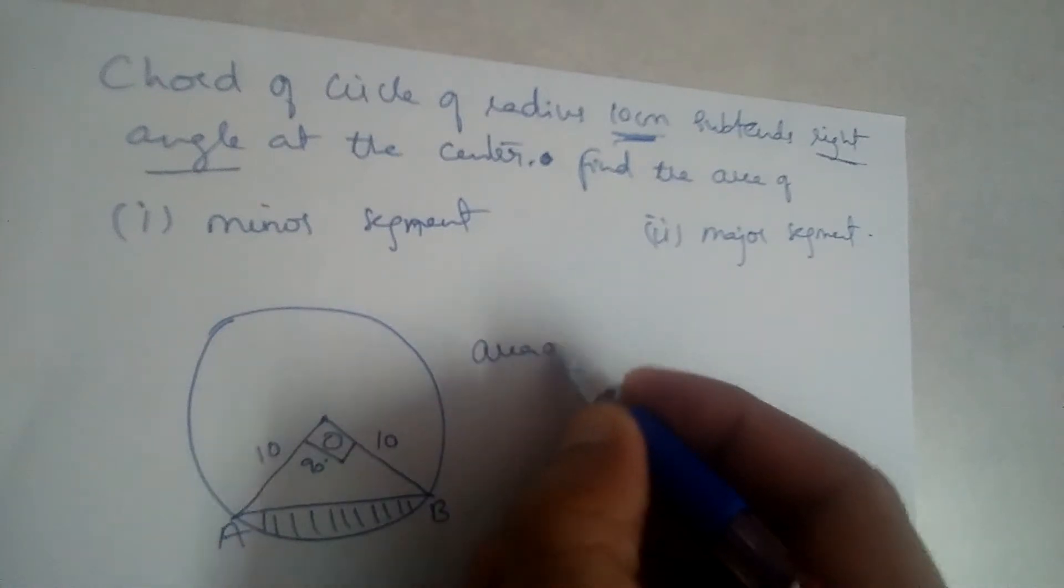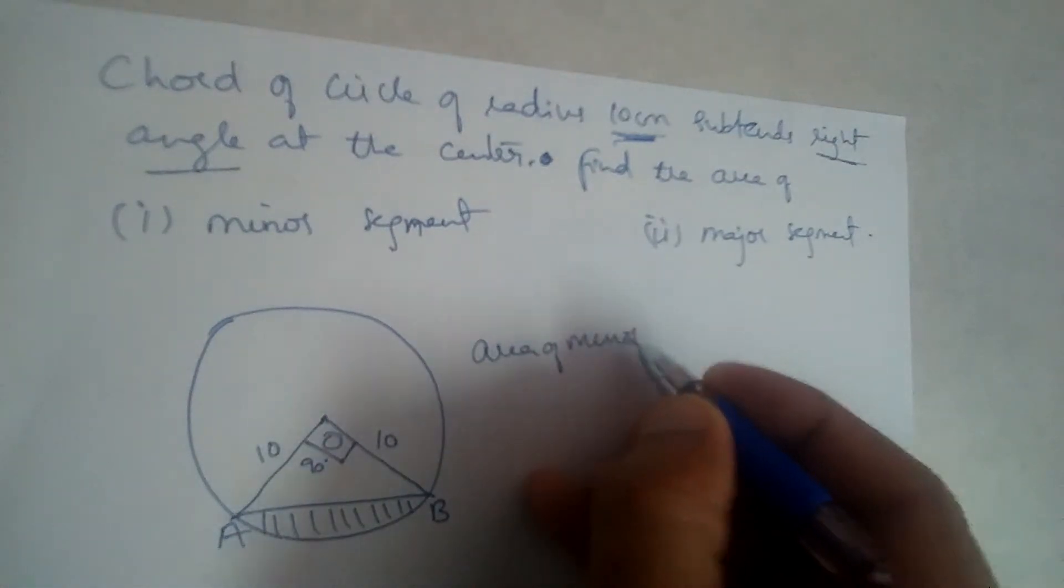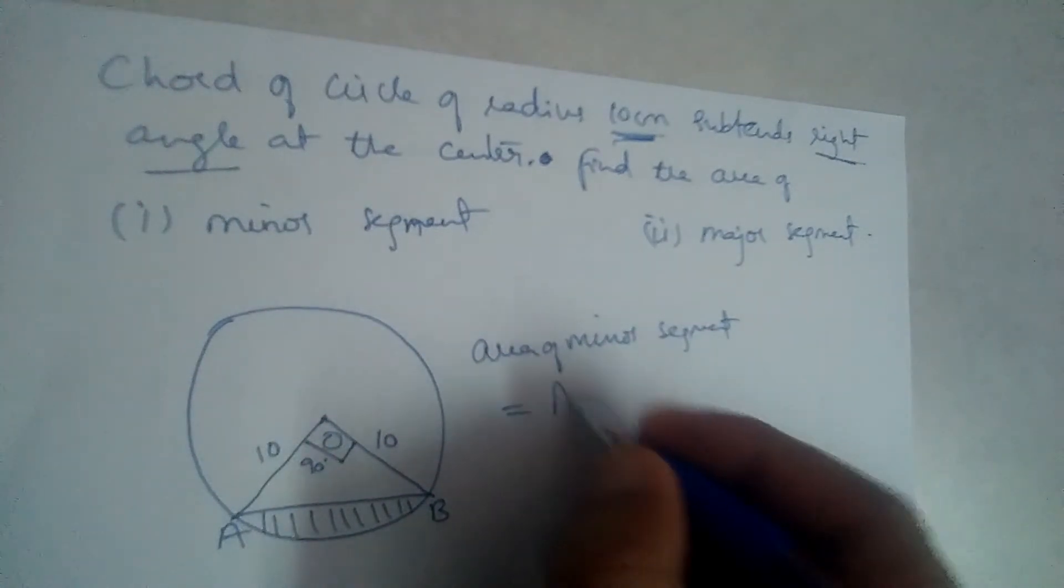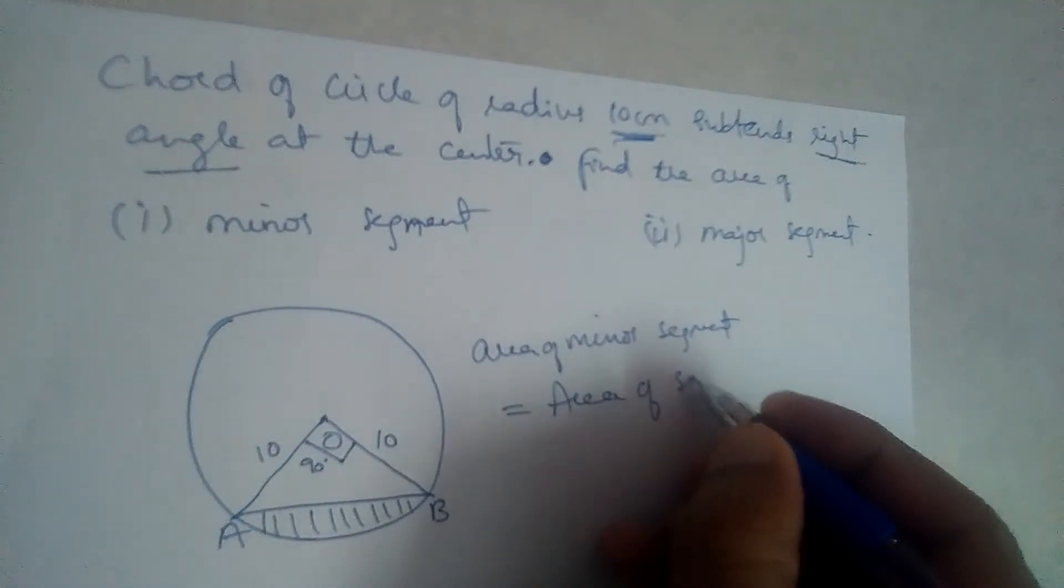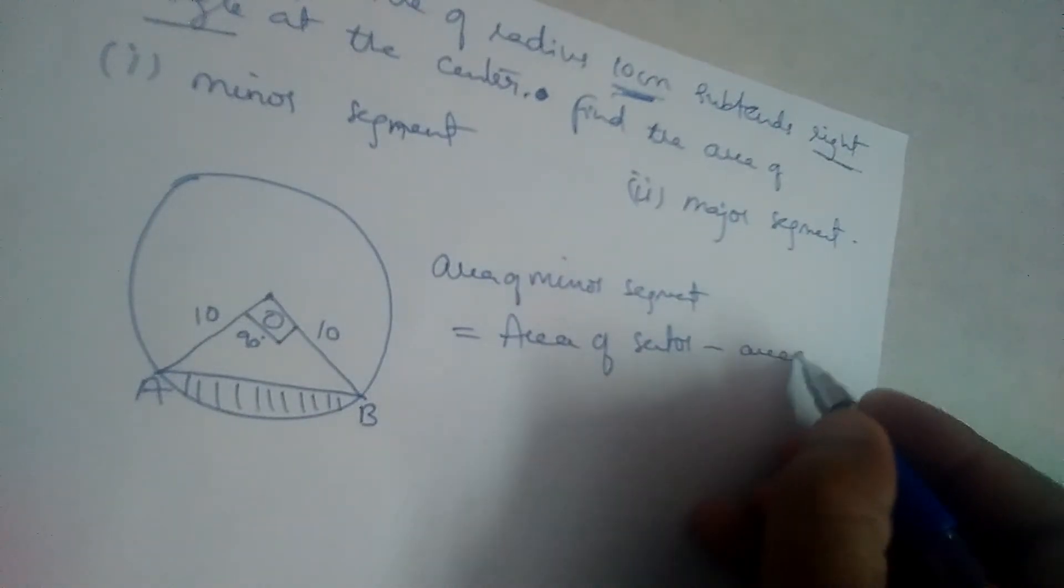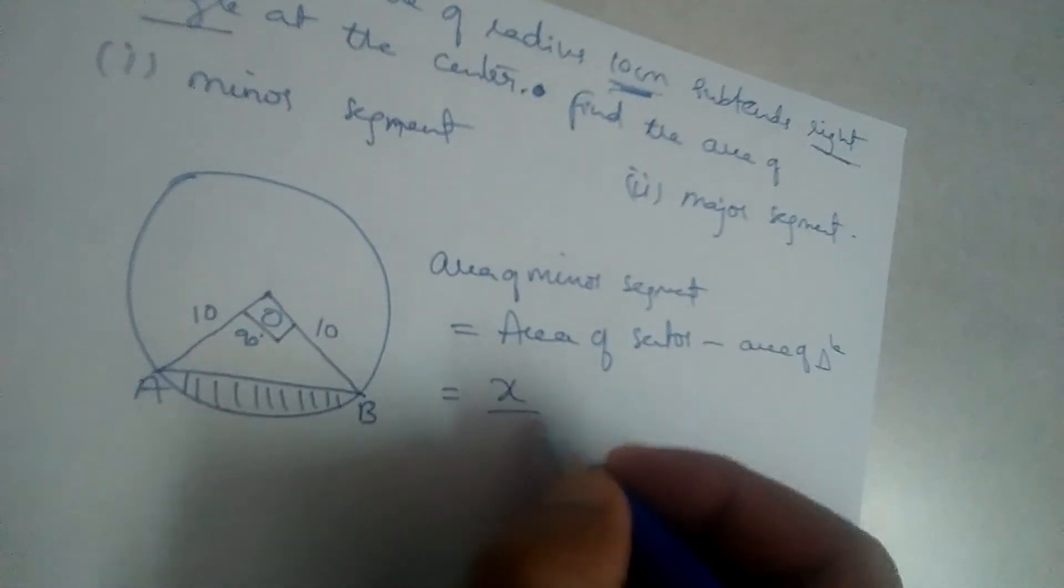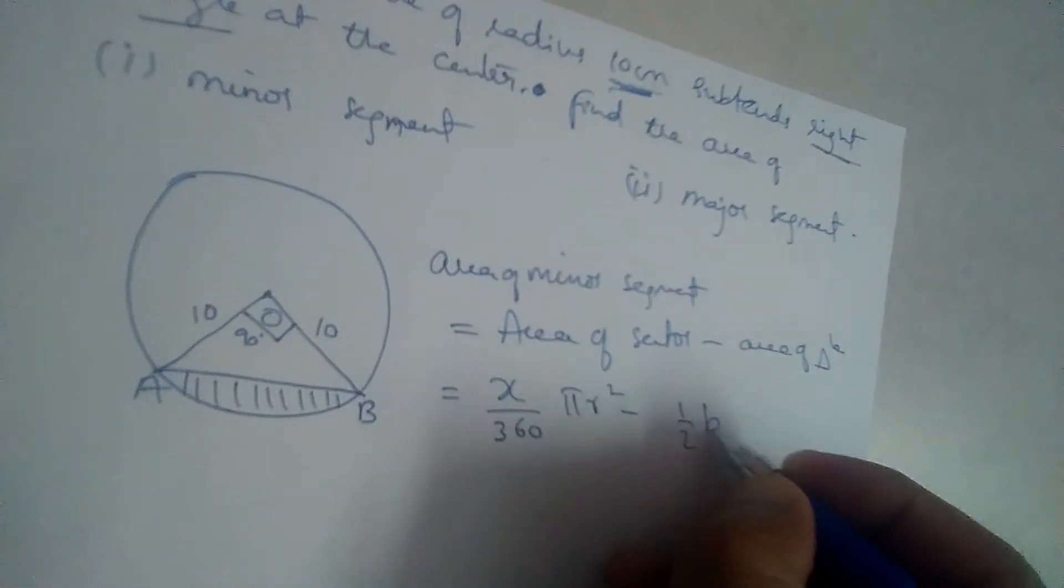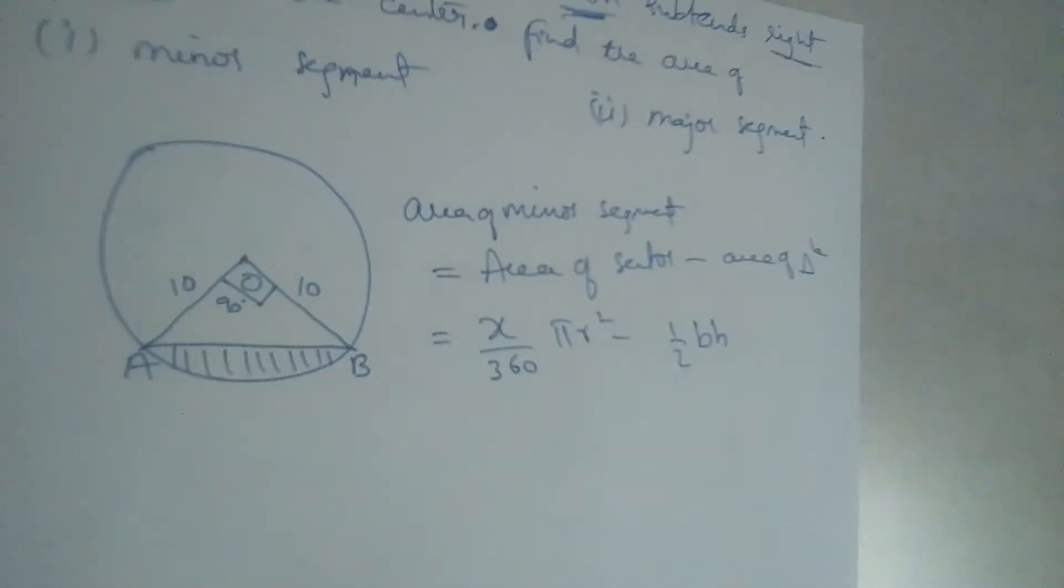What is area of minor segment? It is area of sector minus area of triangle. So area of sector is x by 360 into pi r square. Area of triangle is half into base into height.